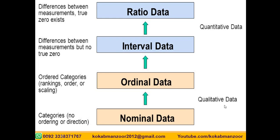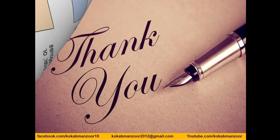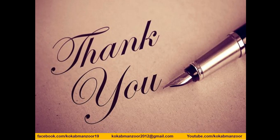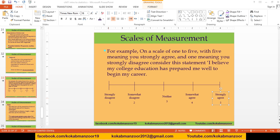In summary: nominal and ordinal scales are used with qualitative data — mostly non-numeric categories. Interval and ratio scales are used with quantitative data. I hope the concept is clear. If you have any questions, please ask. Thank you very much, take care, stay blessed, and see you in the next video.